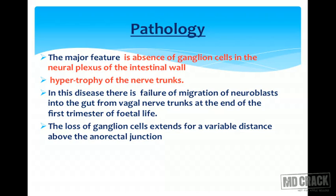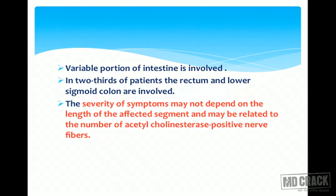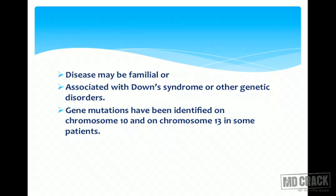The loss of ganglion cells extends for a variable distance above the anorectal junction. In two-thirds of patients, the rectum and lower sigmoid colon are involved. The severity of symptoms may not depend on the length of the affected segment but may relate to the number of acetylcholinesterase-positive nerve fibers. The disease may be familial or associated with Down syndrome; gene mutations have been identified on chromosomes 10 and 13.